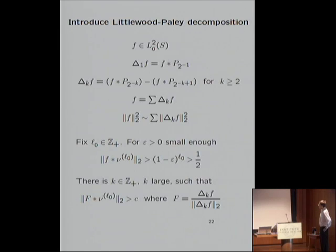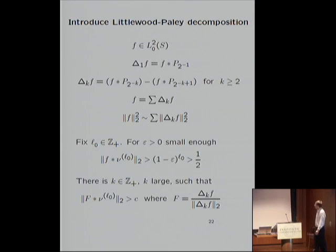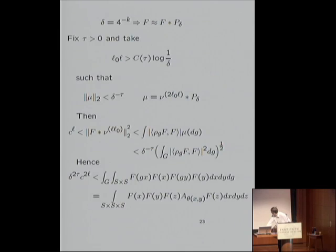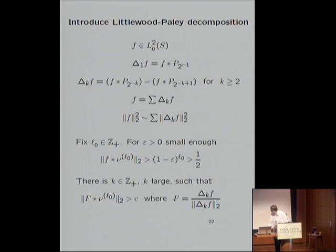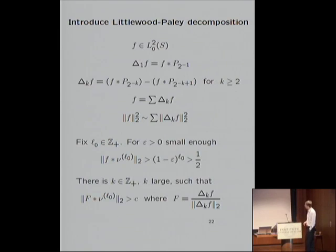Something amazing is exploited: on one hand SO(3) is really a three-dimensional object, while the representation is on L^2 of the two-sphere, which is only two-dimensional. This allows certain considerations which will show there is a contradiction. We use a standard harmonic analysis Littlewood-Paley decomposition of the L^2 space, introducing dyadic blocks delta_K F, where F is written as a sum of these blocks — delta_K F is defined by taking convolution with p_{2^{-K}} and subtracting convolution with p_{2^{-K+1}}. The delta_K F are functions roughly constant on scale 2^{-K} and of mean zero on a slightly larger scale. There is a nice L^2 property: the square of the L^2 norm of F is the sum of squares of the blocks.